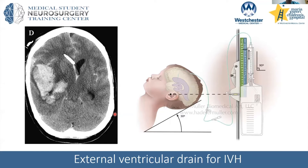One of the times when we do this procedure — called an external ventricular drain — is when there's intraventricular blood. Some of these blood products will either physically block off the flow of cerebrospinal fluid, or as the blood products break down and are absorbed, they could scar some of the arachnoid granulations, which are used to absorb CSF, and it could lead to hydrocephalus.